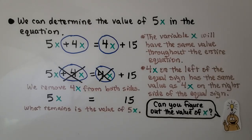What remains is the value of 5x. We know 5x is equal to 15. Can you look at this and figure out the value of x? 5 times some number is equal to 15. So by removing the same term or same numbers from both sides of the equal sign, we can determine the value of a term.